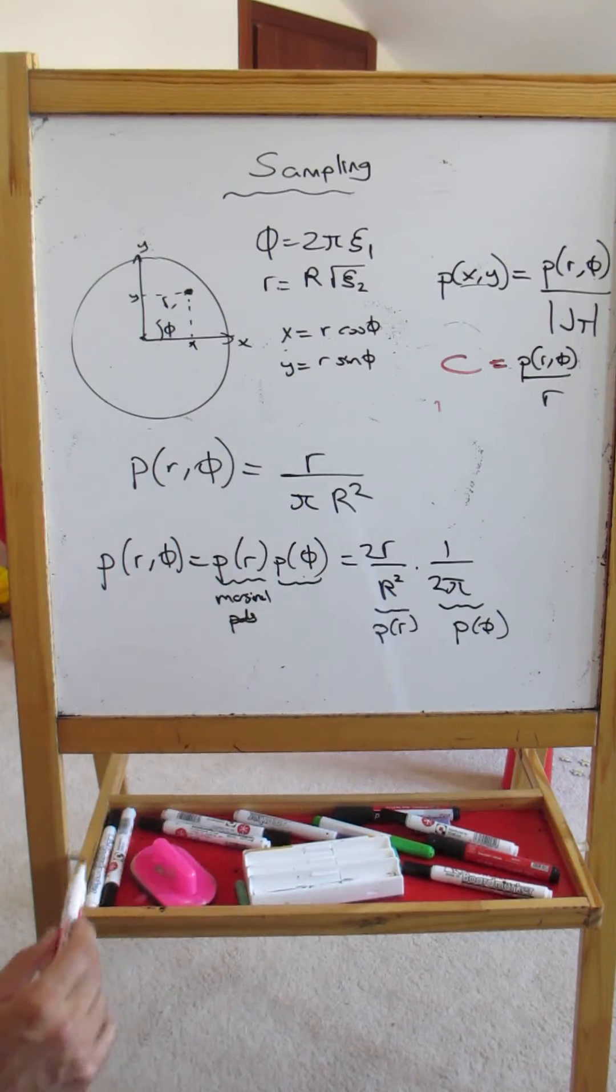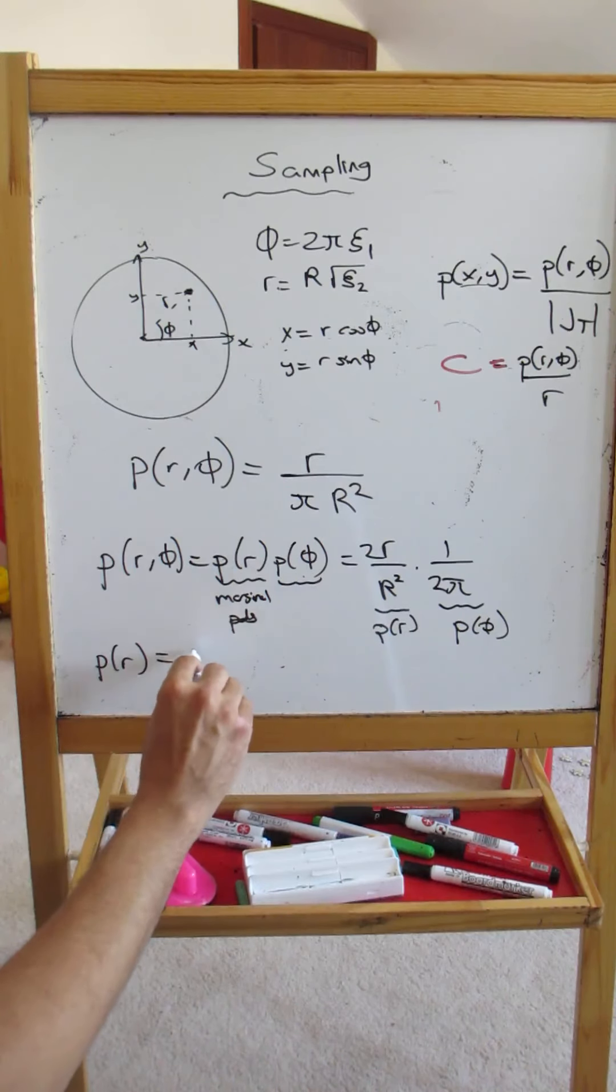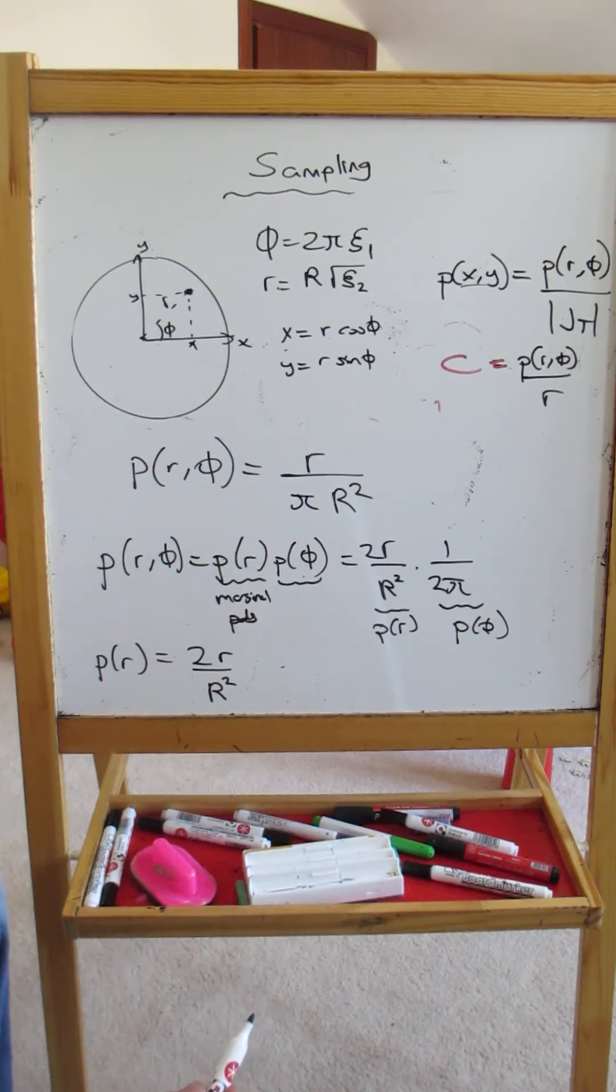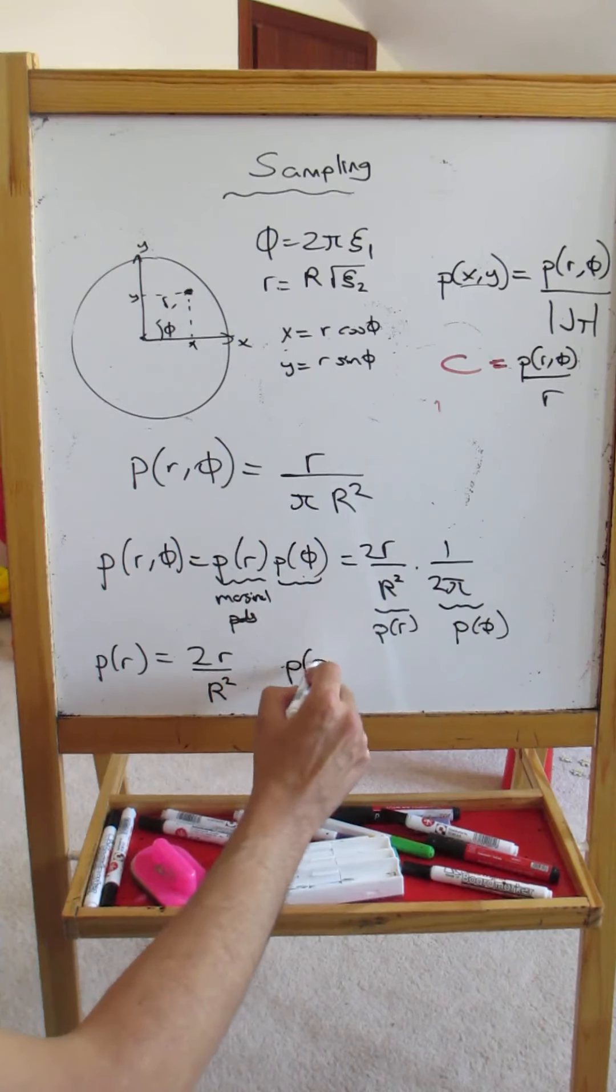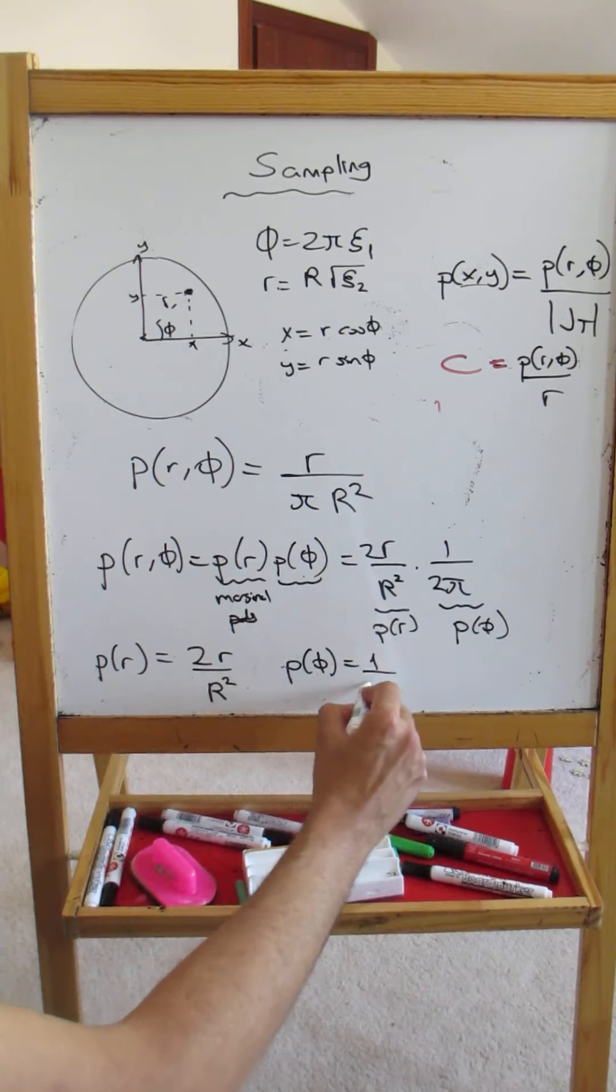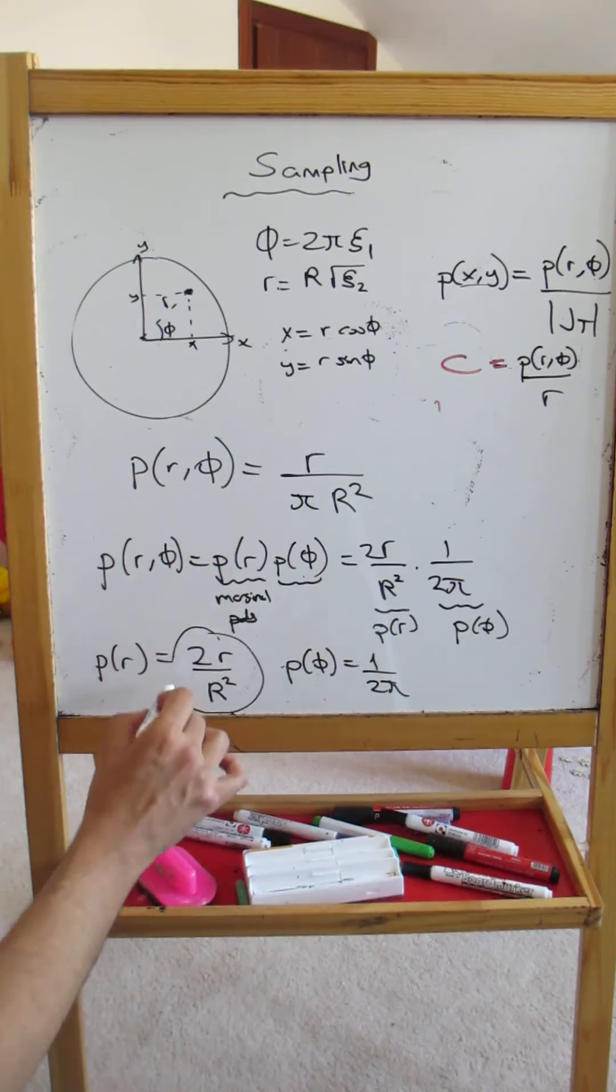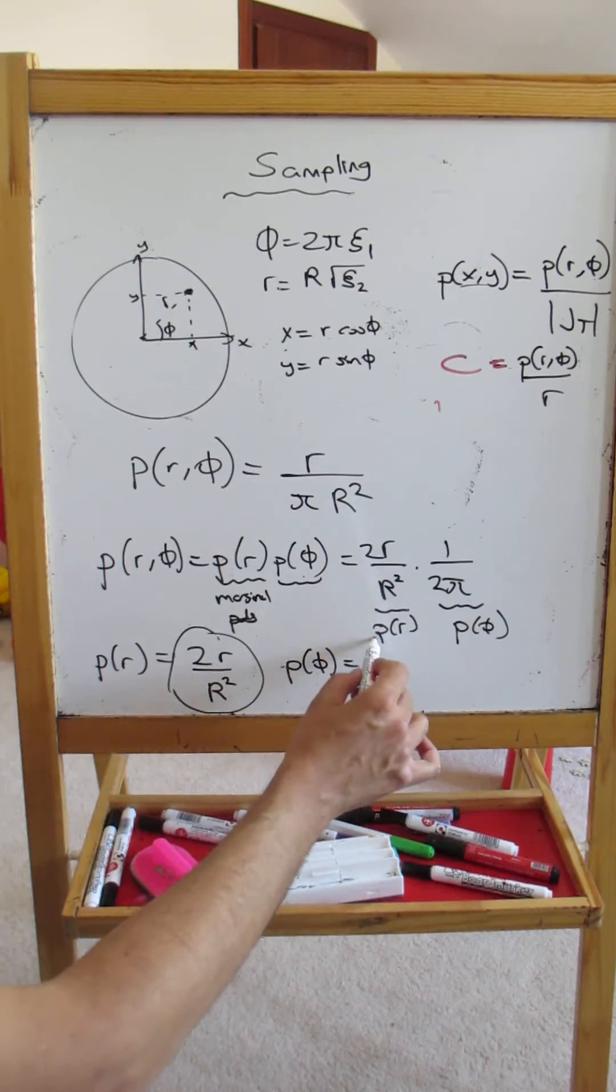So this gives us that the probability of r is equal to 2r divided by R², and the probability of phi is equal to 1 over 2π. Actually this is what we have used exactly previously, when we were intuitively deriving the PDFs, these are what we have used.